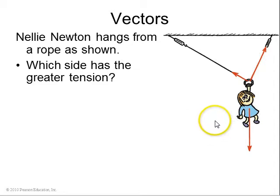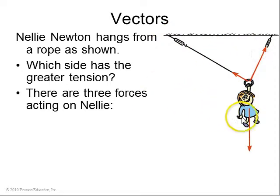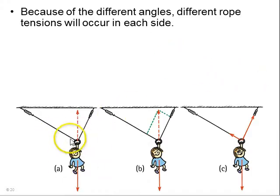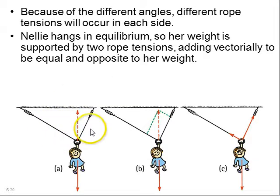Here's another vector problem. Now Nellie Newton hangs from a rope as shown, one rope that goes underneath this ring. So which side of the rope has the greater tension? Well, there's three forces acting on Nellie. The weight acts downwards. There's the tension in the left-hand side of the rope and then the right-hand side of the rope. Because these tensions are at different angles, there may be different tension forces on each side. Nellie hangs in equilibrium, so her weight is supported by two rope tensions adding vectorially to be equal and opposite to her weight. So we know her weight is down. This dashed line must be the sum of these two tensions. It must act directly up and be equal to her weight.